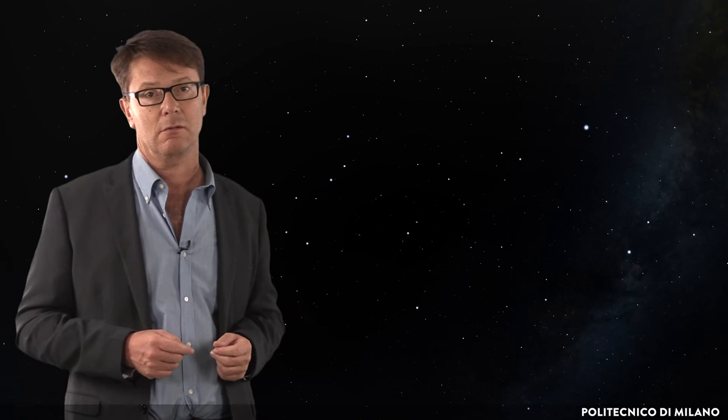However, identification of ancient constellations has proved to be problematic. For instance, the Egyptians saw a female hippopotamus, where we see Draco.